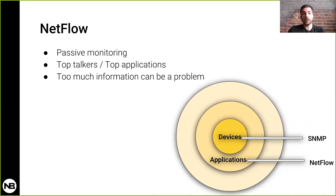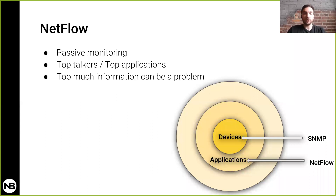Like SNMP, NetFlow is passive monitoring, so after it monitors flows from a user to an application, if they're experiencing some sort of issue you won't receive an alert or find that information until after the fact. Another negative for NetFlow is that it can provide an overabundance of information, which can be overwhelming when trying to find a simple troubleshooting issue, and since it can provide that overabundance it can become very resource intensive.